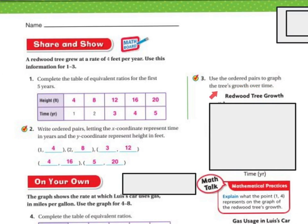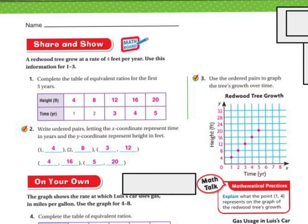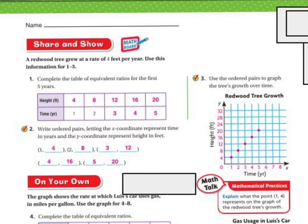Now use those ordered pairs to graph the tree's growth over time. Going over 1 and up 4, over 2 and up 8, over 3 and up 12, over 4 and up 16, over 5 and up 20. For the rest of the problems, work on your own or with a partner — I'm available if you need me. Good luck.